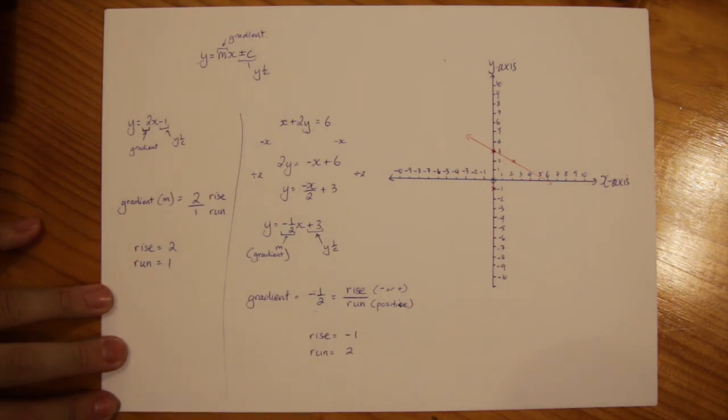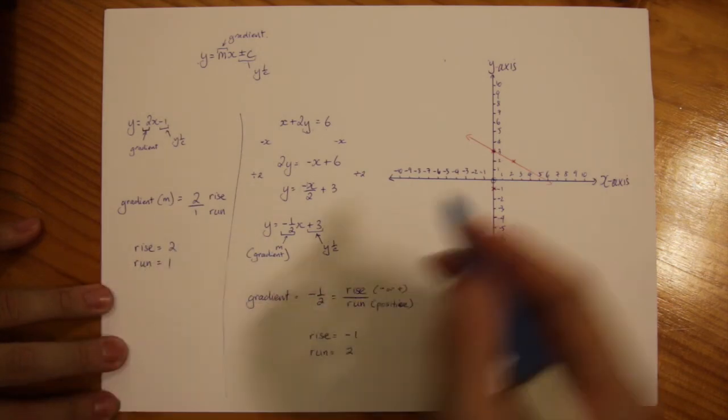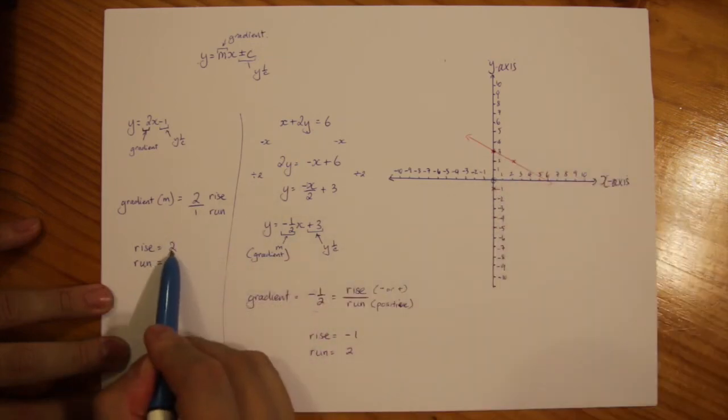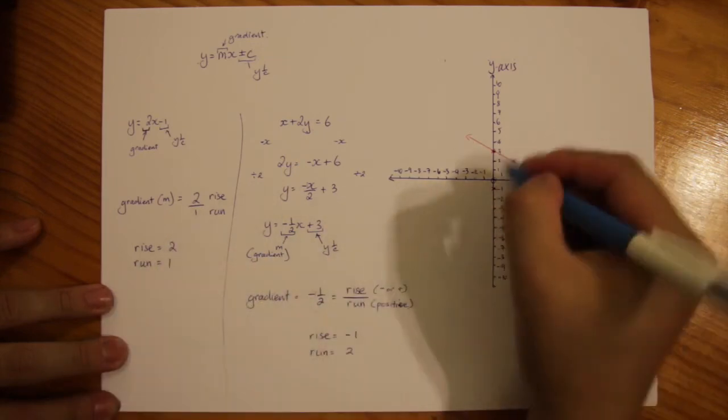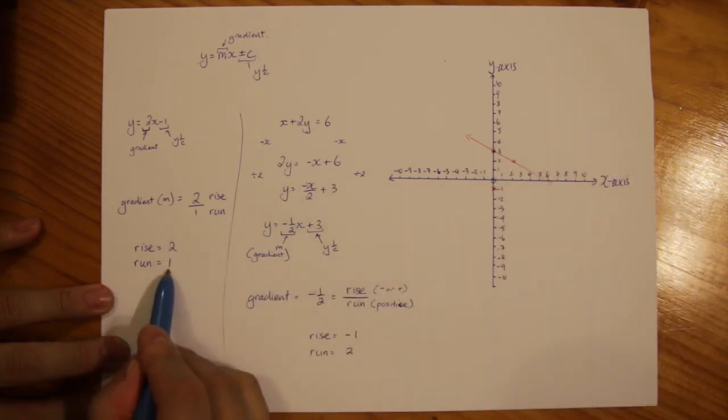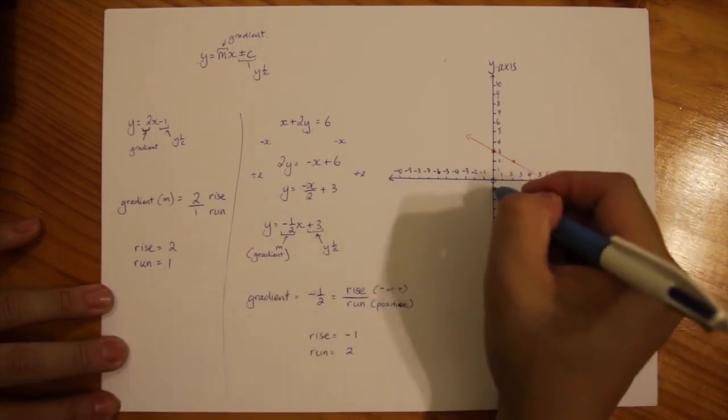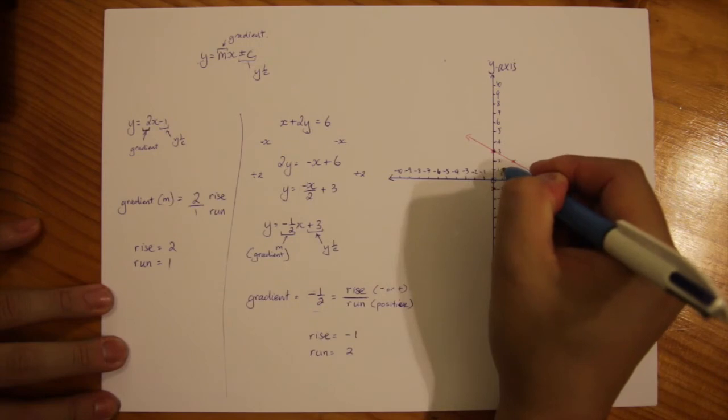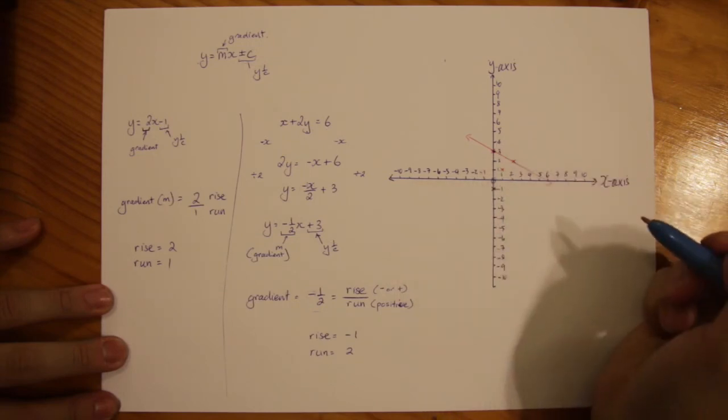So just like before, we're going to start at this point. We're going to go up 2 because it's a positive number. So 1 and 2. And then we're going to go across to the right by 1 unit. So 1, 2 up, 1 across. And there's my second point.